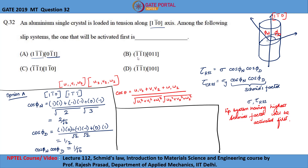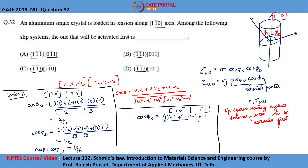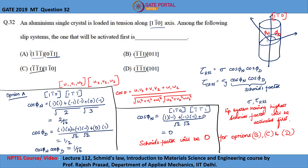For all other options B, C, and D, the slip plane is the same — (1̄ 1̄ 1). So cosφₙ is the angle between the tensile direction [1 1̄ 0] and the normal to this slip plane [1̄ 1̄ 1]. Computing: cosφₙ = (1×(−1) + (−1)(−1) + 0×1) divided by √2 × √3 = 0. Since cosφₙ = 0, the Schmid's factor is 0 for options B, C, and D. Therefore, option A is the correct answer.